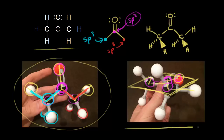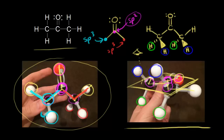Looking at the picture on the right again - imagine your eye is right here, looking down on your flat sheet of paper. Your eye would see these two hydrogens coming out at you in space, and these two hydrogens would be behind the plane of the paper, going away from you. We represent those with dashes.